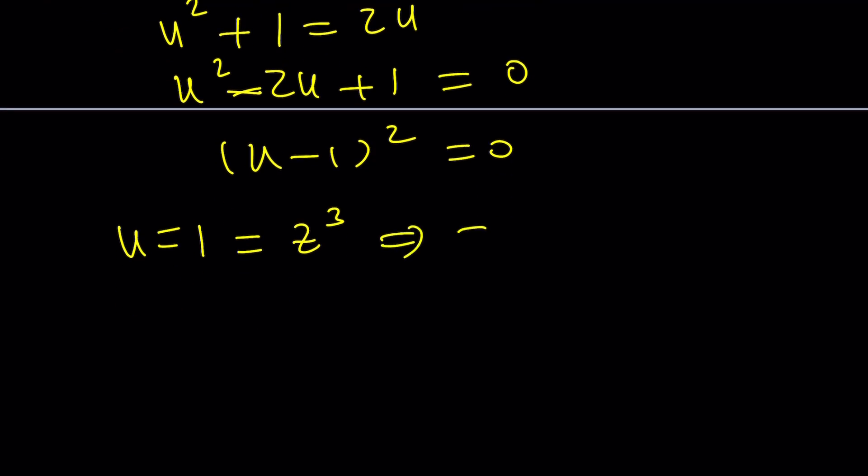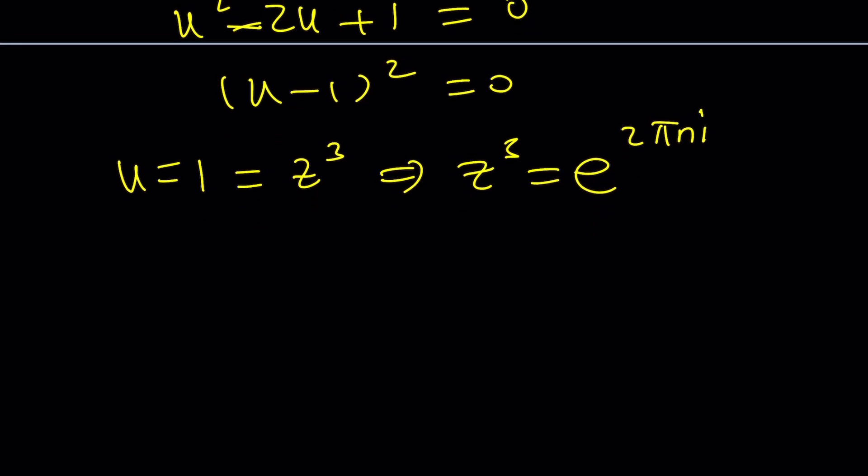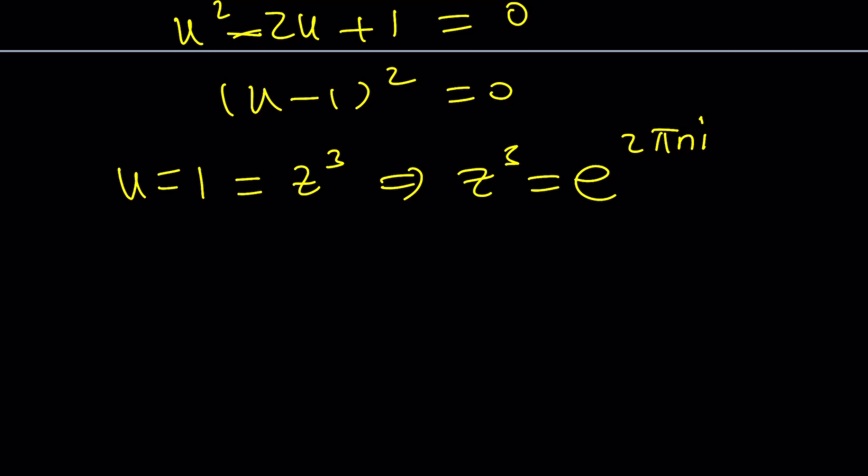And then, from here, we get z cubed equals 1. But let's write it as e to the power 2 pi n. Oh, man. So many similarities with the other video that we made. Please check it out. So now, n is equal to 0. And of course, I'm supposed to divide the exponents by 3.